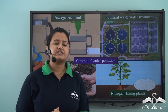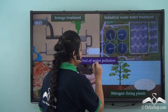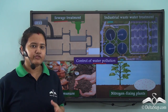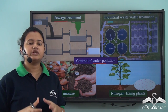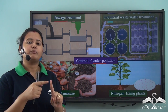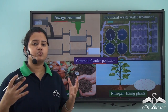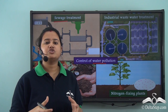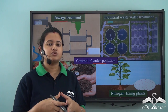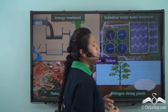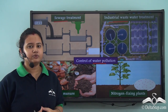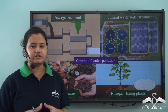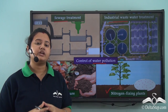In today's video, we discussed various ways to control water pollution. Sewage must be treated in a plant before being released into water bodies — sewage treatment includes three main phases: primary, secondary, and tertiary. Industrial discharges and wastewater must also be treated before releasing them into water bodies. To control agricultural pollutants, we must use natural manure and nitrogen-fixing plants instead of chemical fertilizers. These are the different ways in which we can control water pollution.